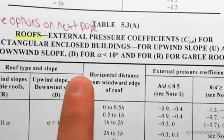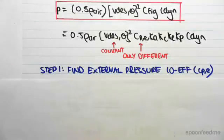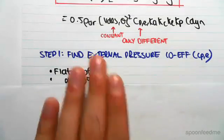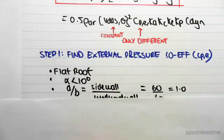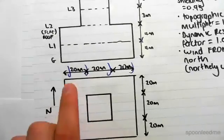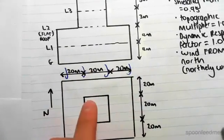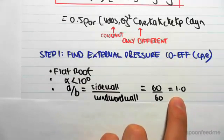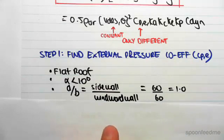If I just zoom in, we're going to be using this table. So just some data: we have a flat roof, which means that alpha, the slope of the roof, is less than 10 degrees. d on b, which is the ratio of sidewall to windward wall, is 60 on 60, so it's 60 on 60. And for the tower will be 20 on 20, which means they're both one.